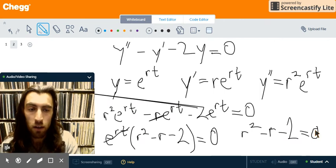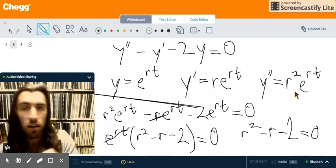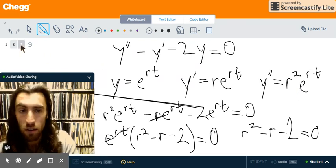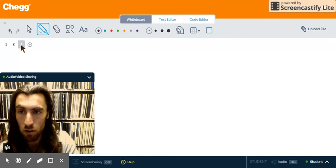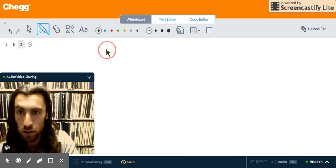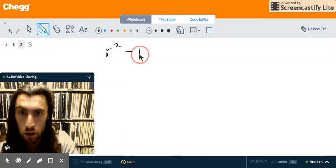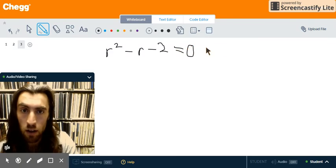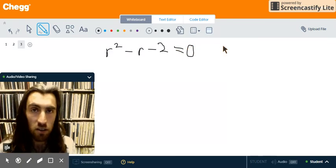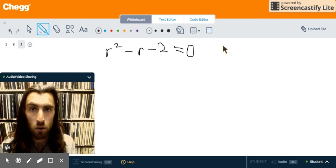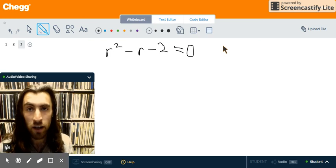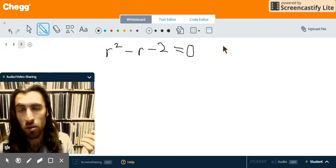Cool. So, this is a normal quadratic equation. You probably solved them a whole bunch while we write it on the next screen. r squared minus r minus 2 equals 0. So, you could solve this using the quadratic formula, or you could just factor. So that's what I'm going to do here.